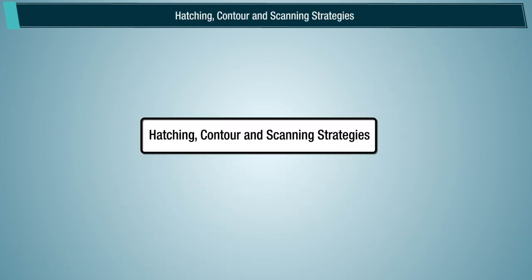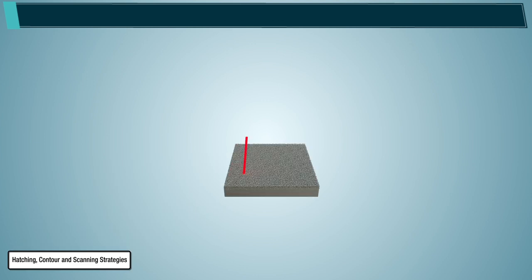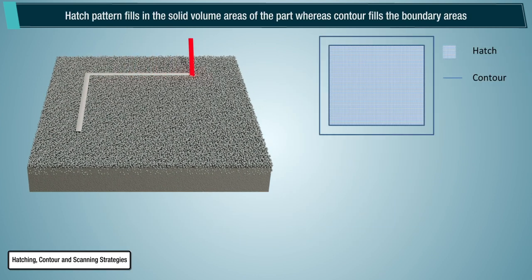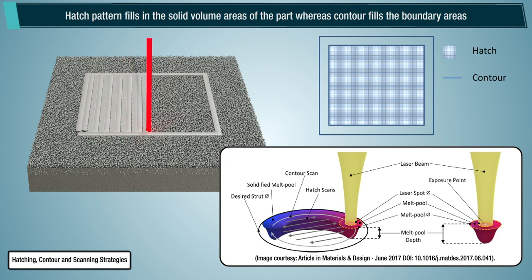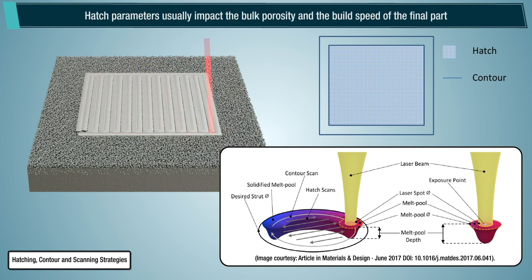Hatching, contour and scanning strategies. Hatch pattern fills in the solid volume areas of the part, whereas contour fills the boundary areas. Hatch parameters usually impact the bulk porosity and the build speed of the final part. Contour parameters affect the surface finish of the part.